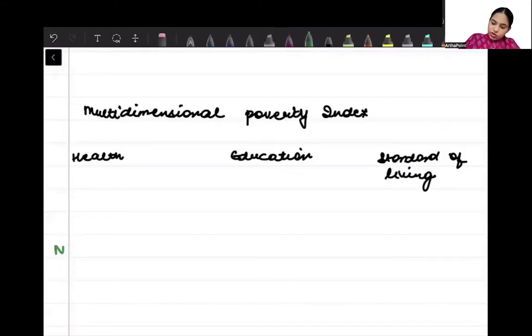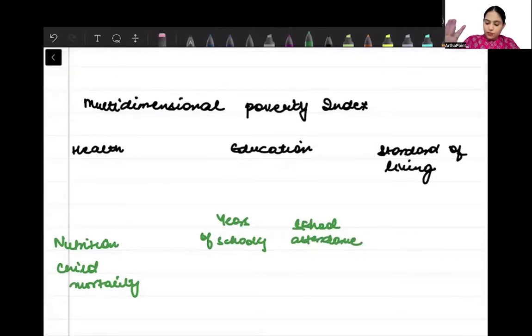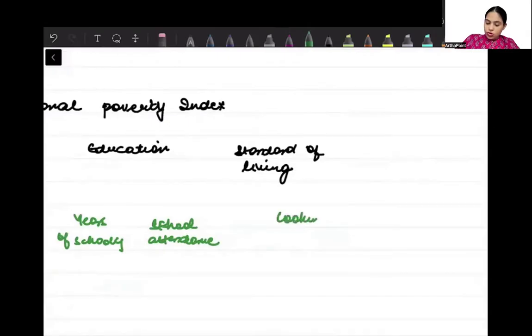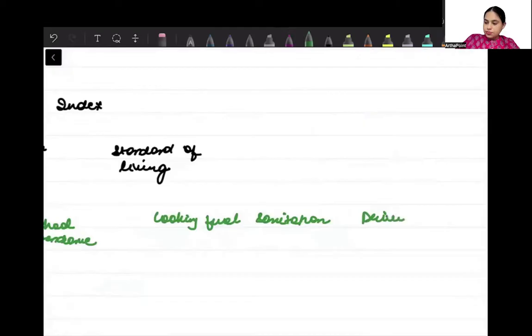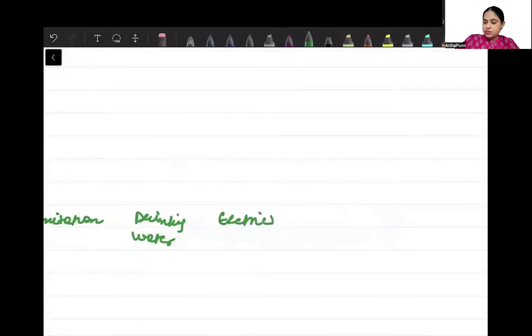The indicators of health are nutrition and child mortality. The indicators of education are years of schooling and school attendance. The indicators of standard of living are cooking fuel, sanitation, drinking water, actually five, there is one more, electricity, housing, and one more actually, assets.